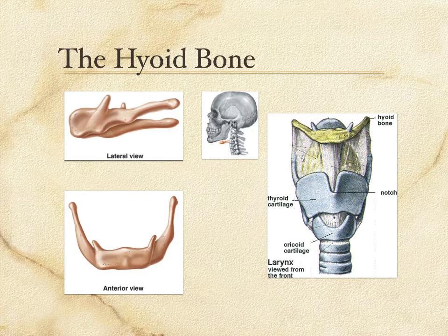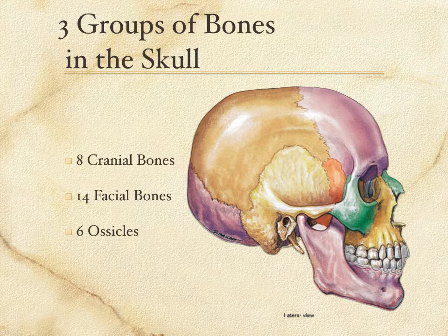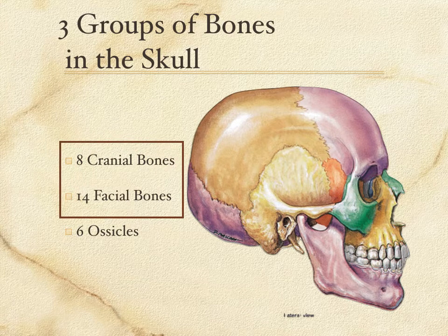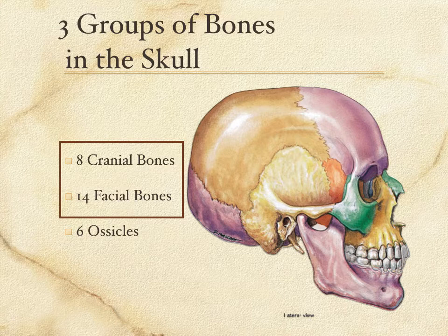You should know the hyoid bone, know where it's connected, and know its purpose in helping to move the larynx. So there's the hyoid bone. Back to the skull: there are 28 bones in the skull. We're going to focus our study on the 22 bones here, and we'll study the ossicles later when we study the ear. In this lecture, I'm going to deal with the cranial bones, and there is a second lecture that specifically deals with the facial bones.